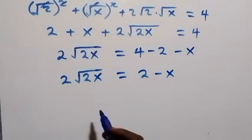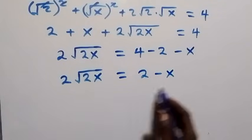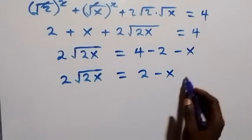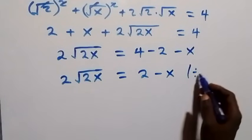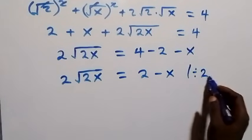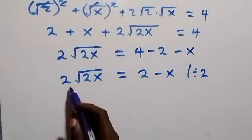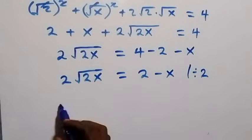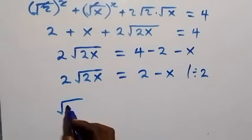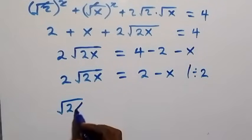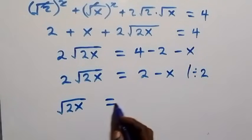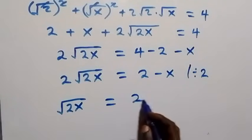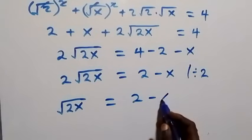From here we can divide both sides by 2. The 2 cancels out and we are left with root 2x, which equals 2 minus x over 2.